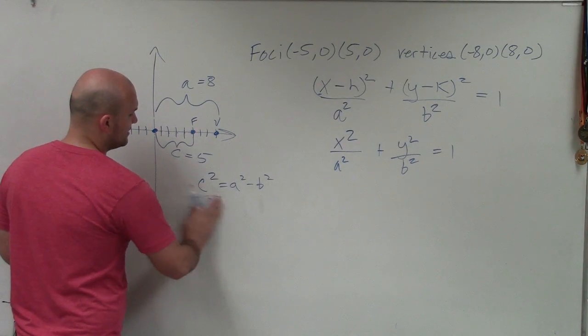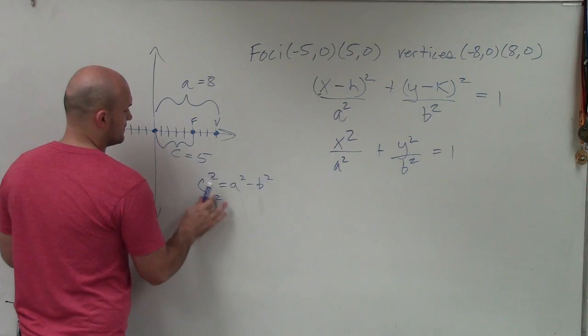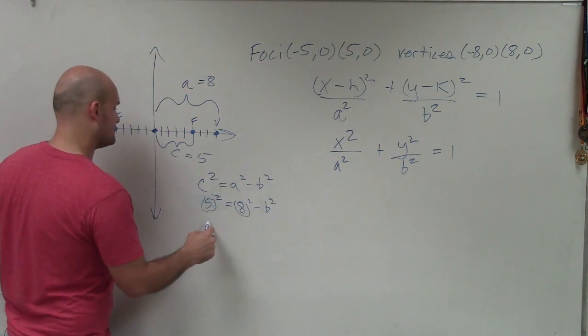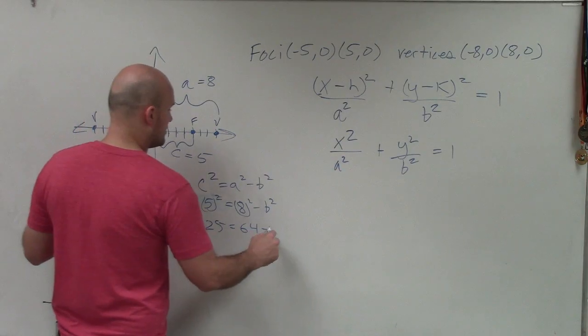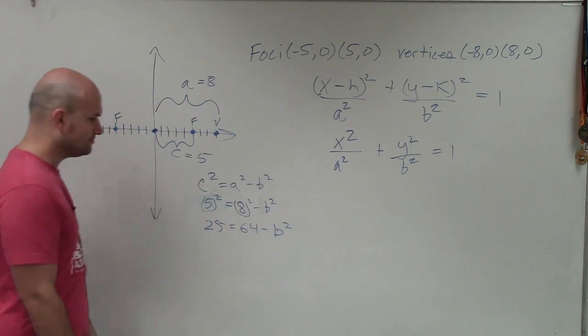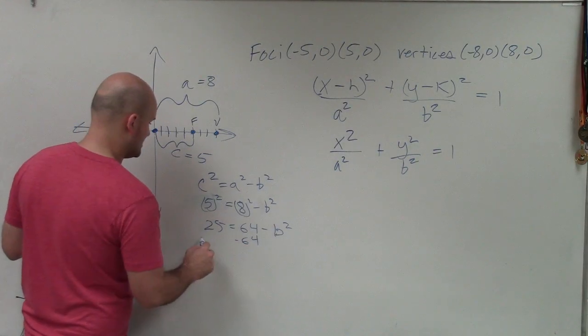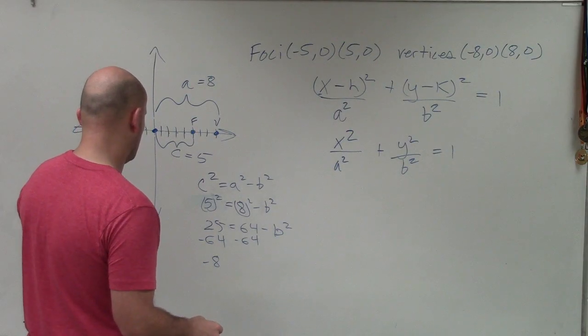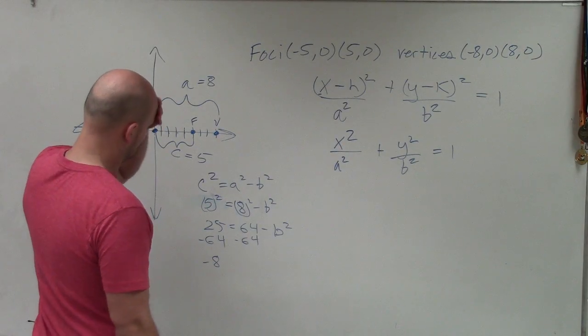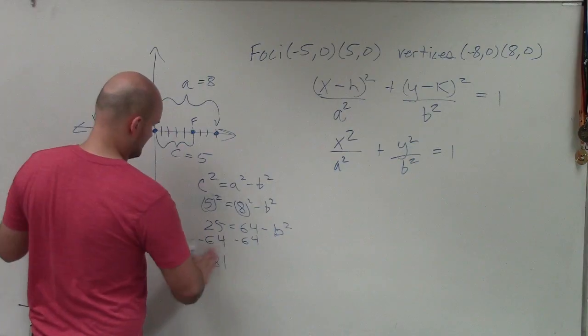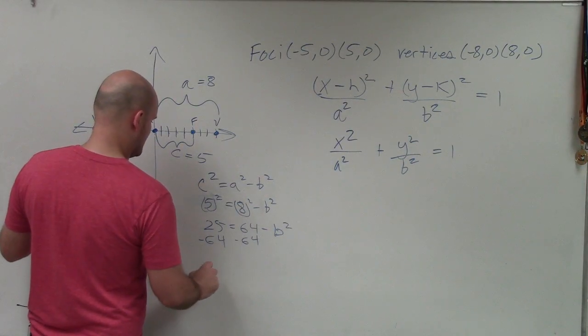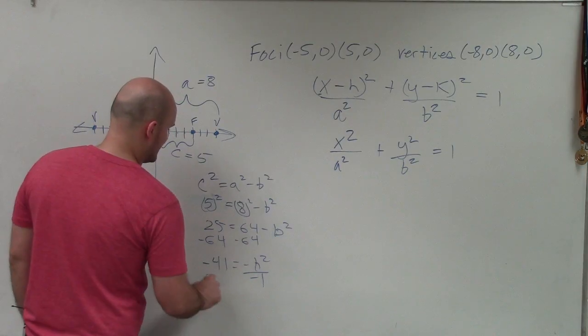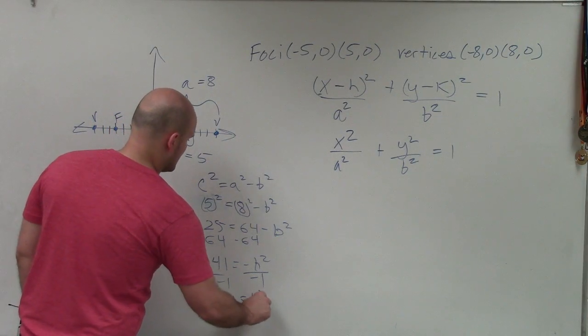So I know what c² is. That's 25. Let's write it in there, actually. So I know c = 5, so 5² = a² - b². So 25 = 64 - b². All right, so now what I can do is just subtract 64 on both sides. And you have -39 = -b². Then I divide by -1, divide by -1, and I have 39 = b².